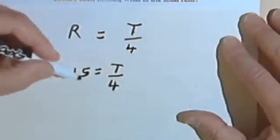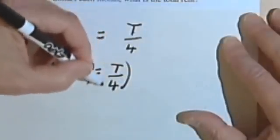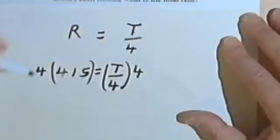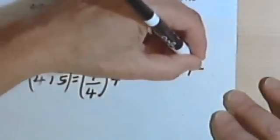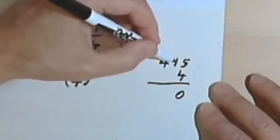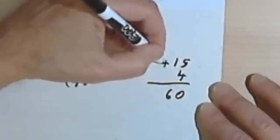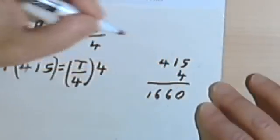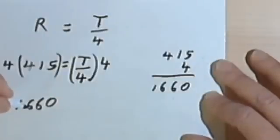To solve this for T, I'll just multiply both sides by 4. Multiply 4 times 415. Let's do this over here. 4 times 415. So 4 times 5 is 20. I've got to carry a 2. 4 times 1 is 4, plus 2 is 6. 4 times 4 is 16.